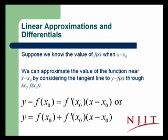In general, suppose we know the value of f(x) when x is equal to x₀. We can approximate the value of the function near x equal x₀ by considering the tangent line to y equal f(x) through (x₀, f(x₀)). How do we do that? Well, we have y minus f(x₀) is equal to the slope f'(x₀) times x minus x₀. We bring the f(x₀) to the other side, and we have the equation of the tangent line, y is equal to f(x₀) plus f'(x₀) times (x minus x₀).